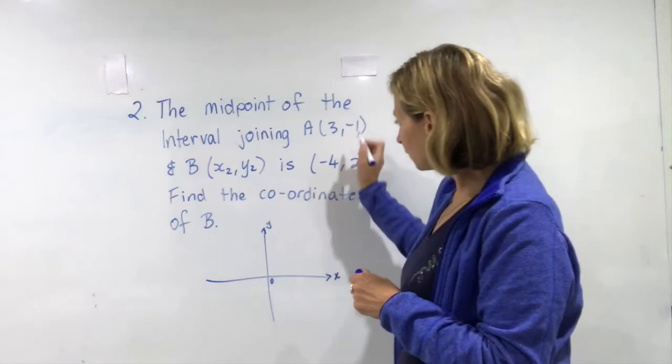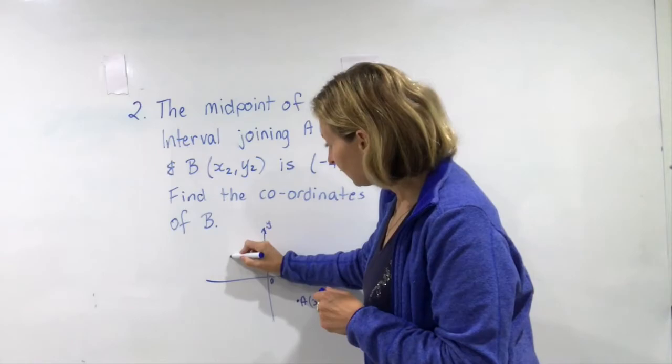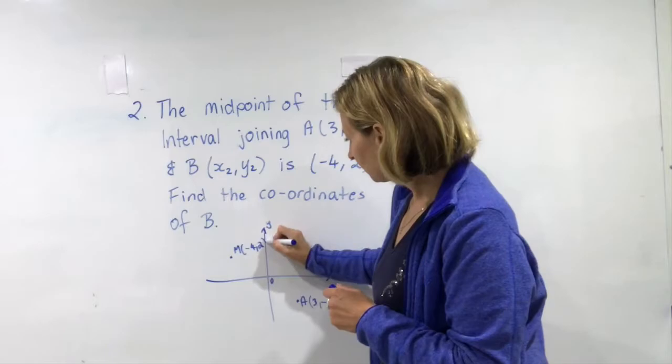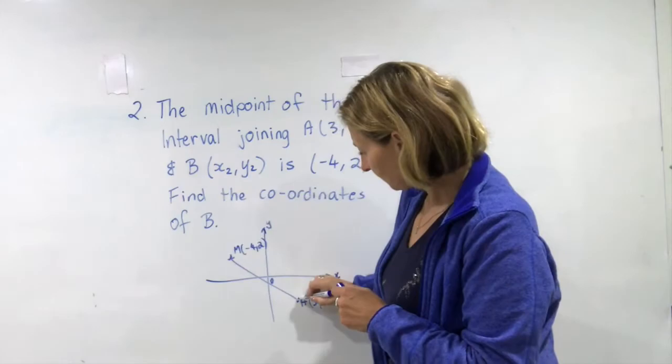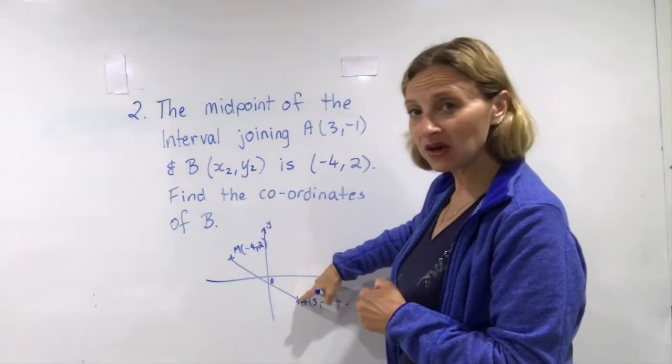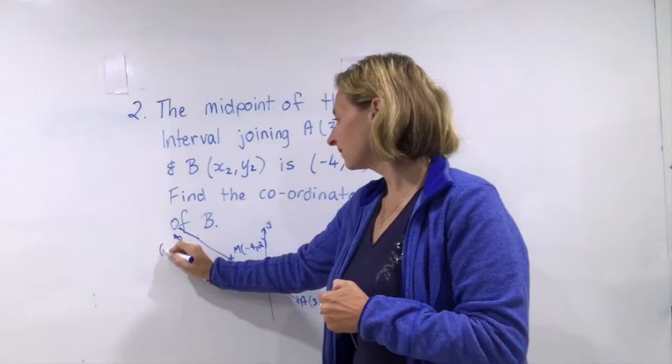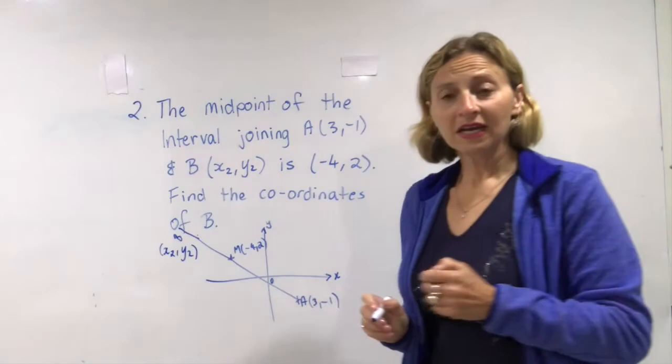Your diagram doesn't need to be accurate. Just approximate. 3, -1 will be somewhere down there. x2 y2 we don't know where that is. -4, 2 will be somewhere over here. That's our midpoint. And the line joining them, they've told us that this point here is the midpoint of AB. If that is the midpoint of A and something else, doesn't that mean that B must be somewhere all the way, well over here. Because M is the midpoint of AB and that becomes x2 y2.